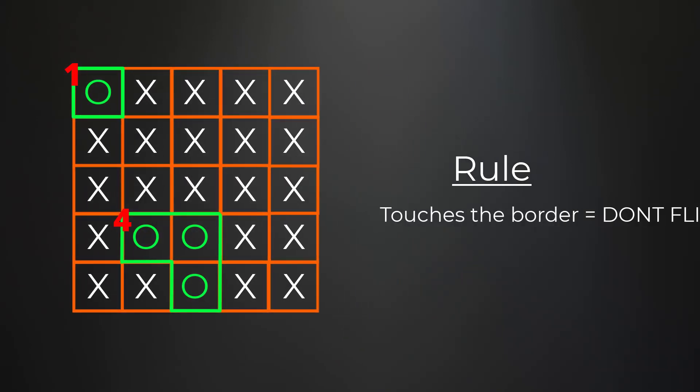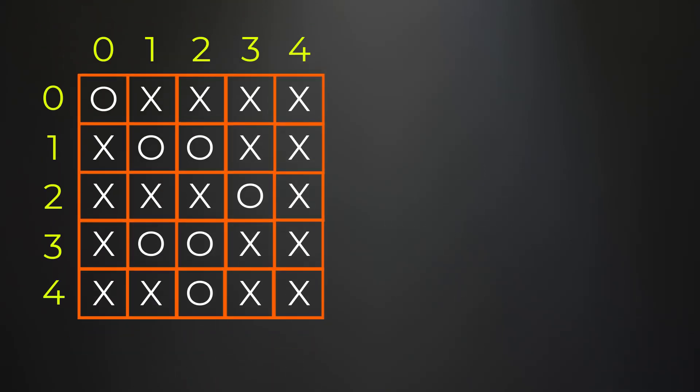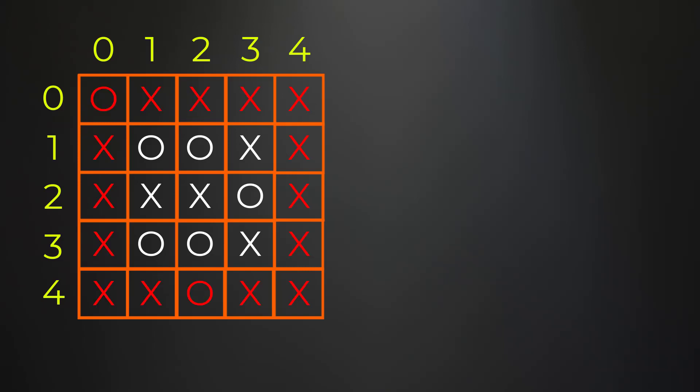This boils down to: if a group of O's touches the border of our matrix, we do not flip them. Any group of O's not touching the border will be flipped to X's. This is really the hardest part of the problem — identifying that border-touching groups of O's should not be flipped.